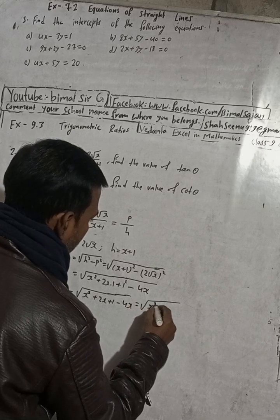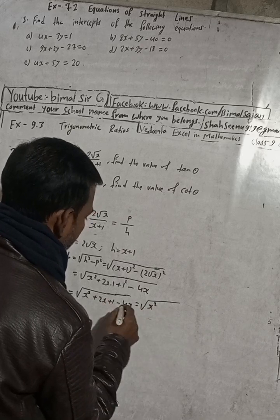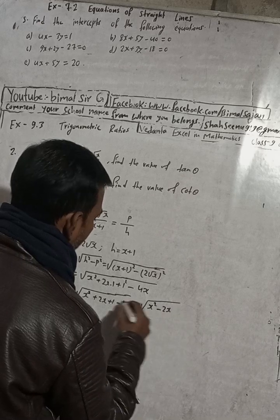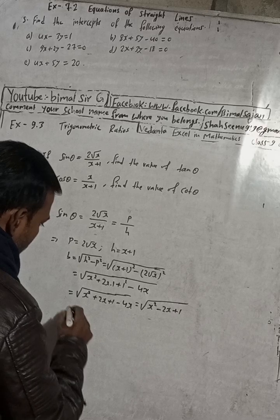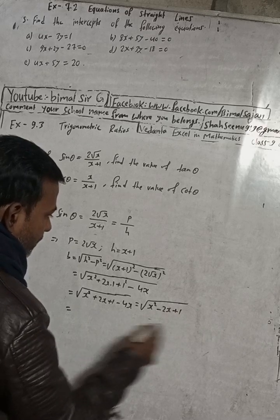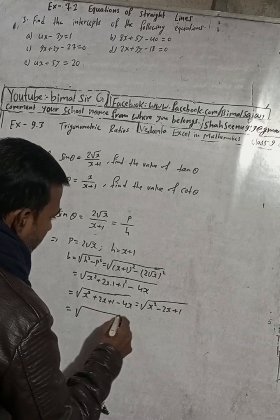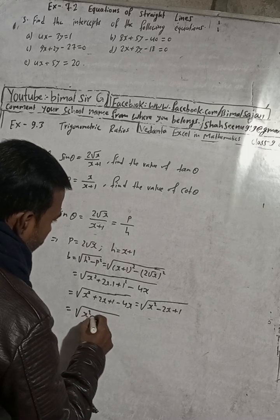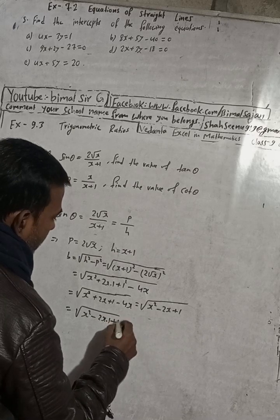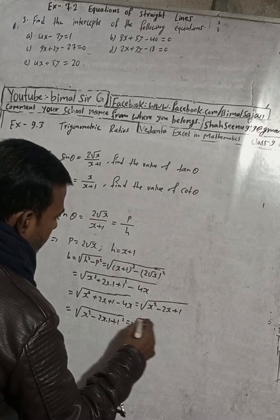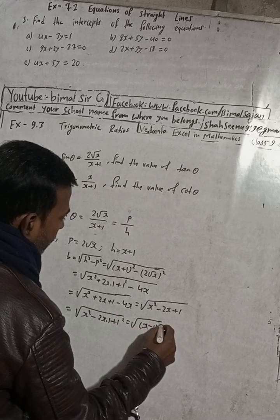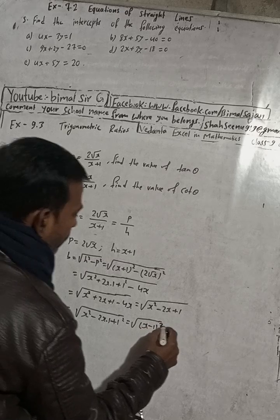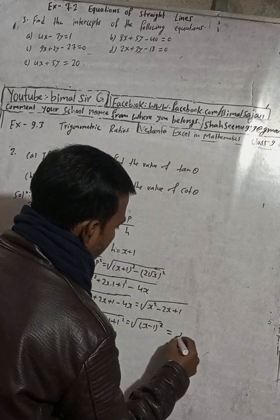We get x squared plus 2x plus 1 squared, 1 minus 4x. So this is x squared, and this is plus 2x minus 4x, and then plus 1. This is the same as x squared minus 2x into 1 plus 1 squared, which equals x minus 1 squared. So the square root cancels and we get x minus 1.